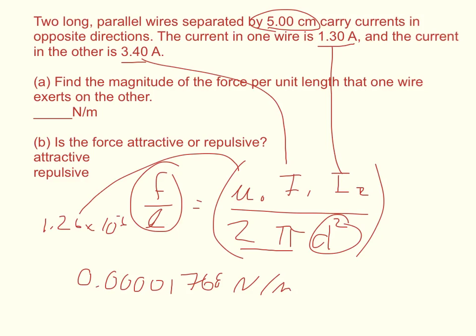You should get an answer of 0.00001768 newtons per meter. Now it asks, is the force attractive or repulsive? Well, currents going in the same direction are attractive versus going in the opposite direction are repulsive. This says that they are going in opposite directions, so they are repulsive forces.